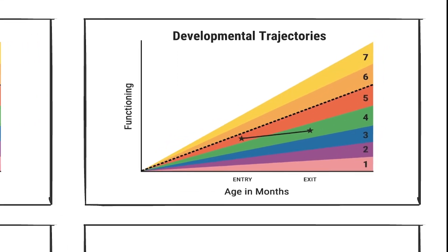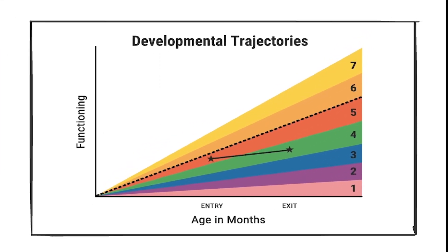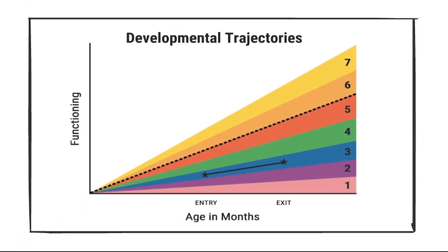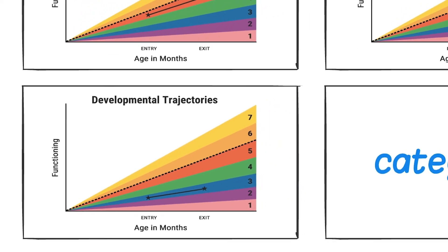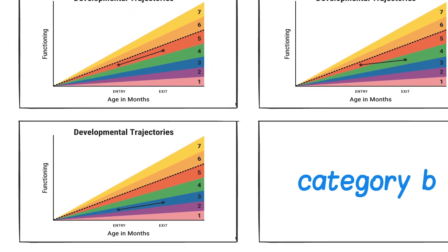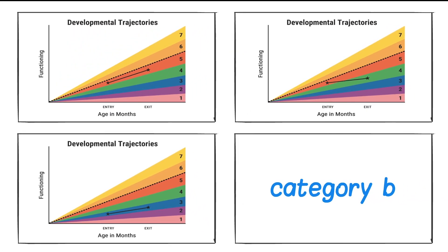In each of these category B examples, the child showed growth but had not moved closer to functioning like same-age peers by the time of exit.